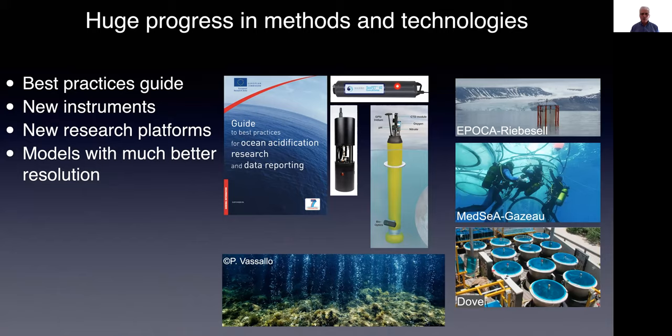New instruments were designed to measure pH in an autonomous manner, including autonomously on Argo floats. New research platforms were used, such as mesocosms deployed in the Arctic by Ulf Riebesell as part of the EPOCA project, by Frédéric Gazeau in the METSI project, and also other kinds of platforms such as land-based mesocosms — for example, a set in Brisbane, Australia. Study sites where CO2 vents are active were also investigated, starting with Jason and Spencer in Ischia, an island near Naples in Italy.